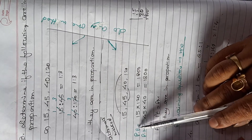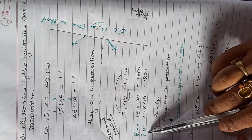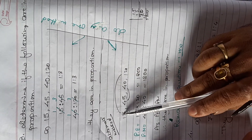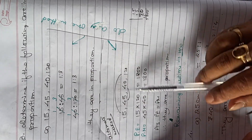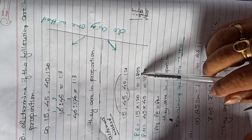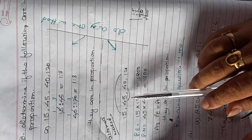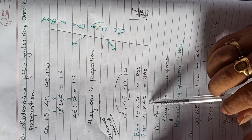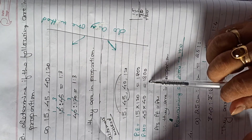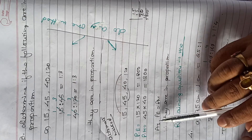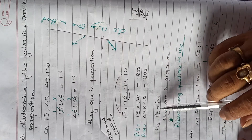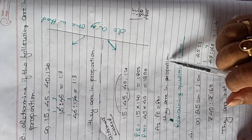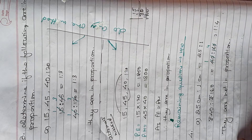The alternate method: product of extremes equals product of means. Product of extremes — 15 into 120 is 1800, and product of means — 45 into 40 is also 1800. Both are equal, so they are in proportion.